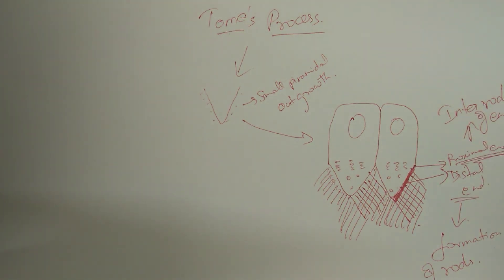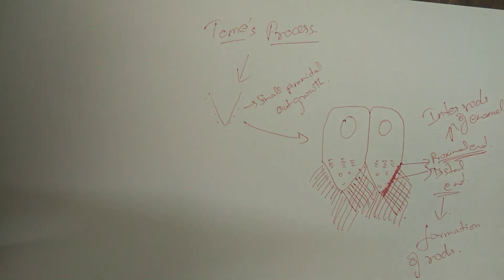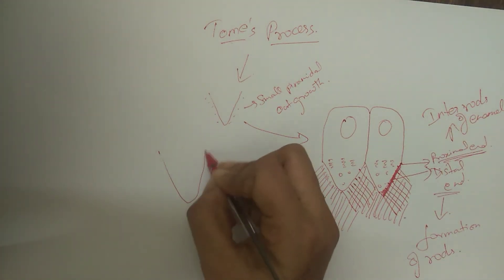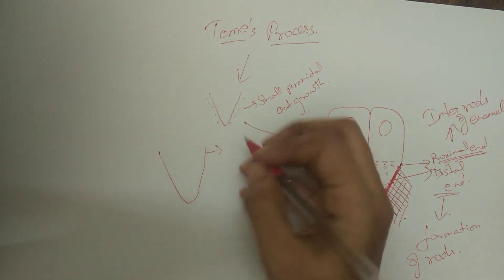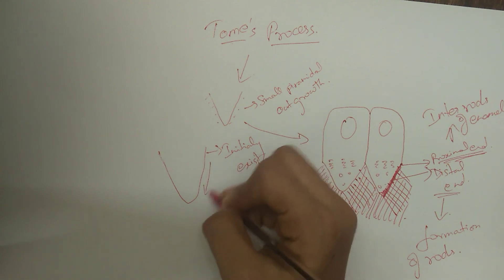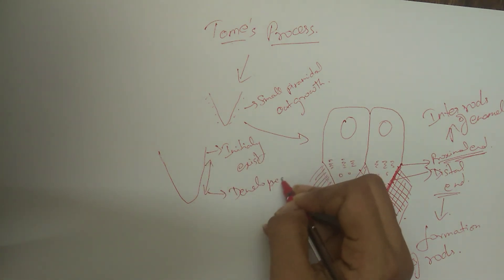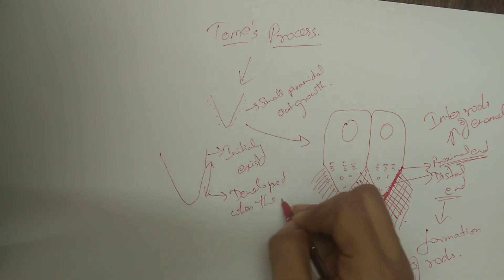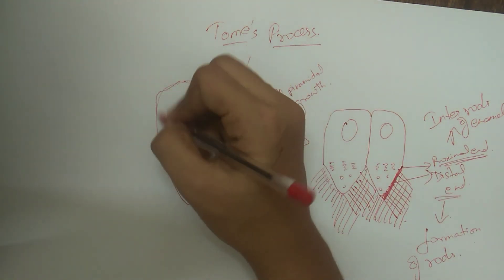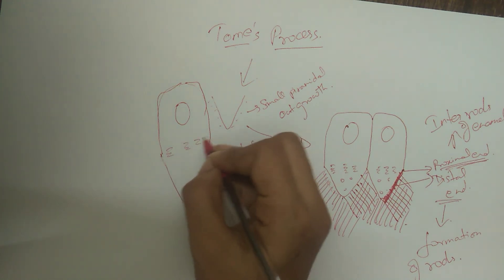The extension from the distal terminal bar to the surface enamel is the proximal portion of the Tomes process, while the distal portion is an outgrowth of the proximal portion. The distal portion of Tomes process penetrates into the enamel formed so far and extends up to the first layer of enamel.